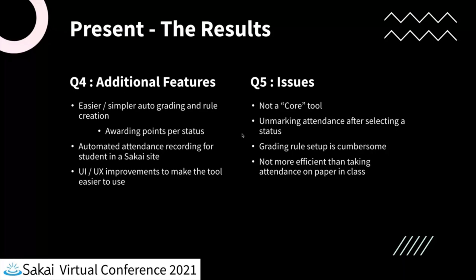From the open-ended questions, a few common themes emerged. The most repeated request for additional features was an easier and simpler way to auto-grade. The grading rule creation was built for specific UD use cases, but many respondents wanted something like: this status is worth this many points, and once you have 10 of them you get a certain score — just simplified and less cumbersome to set up.